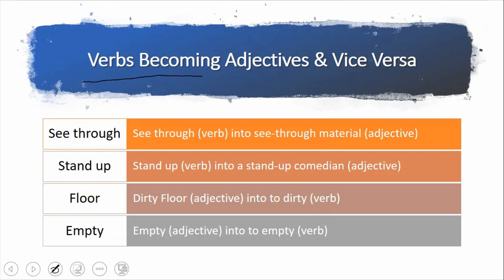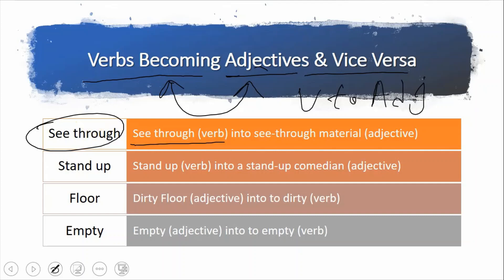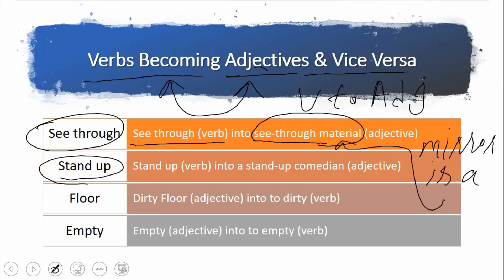اب ہم دیکھتے ہیں verbs becoming adjectives یا vice versa — یعنی کون سے ایسے words ہیں جن میں verbs، adjectives بن جاتے ہیں۔ مثلاً see-through: can you see through it؟ یعنی کیا آپ اس میں سے دیکھ سکتے ہیں؟ لیکن a see-through material میں یہ adjective ہے۔ اسی طرح stand up: please stand up یعنی کھڑے ہو جاؤ — یہ verb ہے۔ لیکن a stand-up comedian یا a stand-up debater میں یہ adjective کے طور پر use ہوتا ہے۔